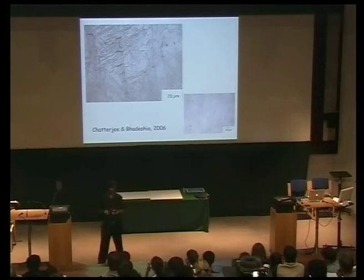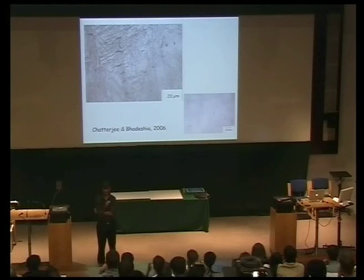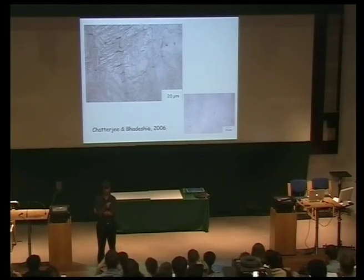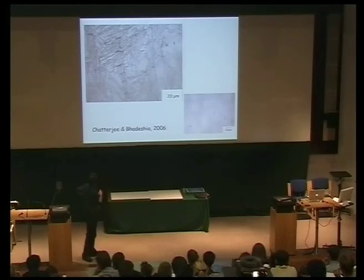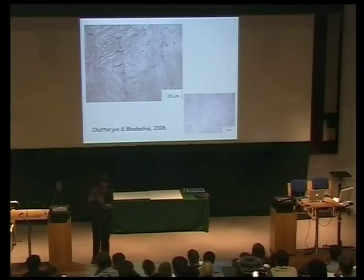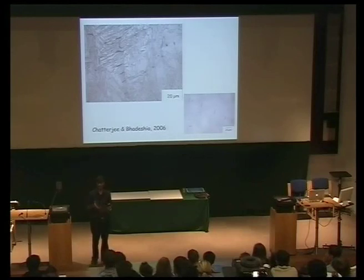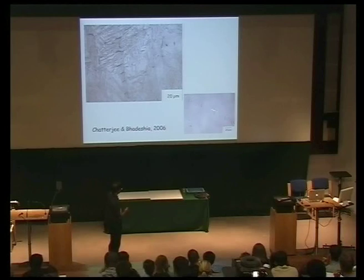Because carbon has such a huge strengthening effect on body-centered cubic iron, this martensite will be very, very hard, extremely strong, and unfortunately brittle at the same time. You can see this is a plate of martensite and it's full of cracks. These cracks form as you cool the material rapidly to obtain martensitic transformation. This is an unetched sample and you can see lots and lots of cracks there. So we can't use a material which contains cracks.